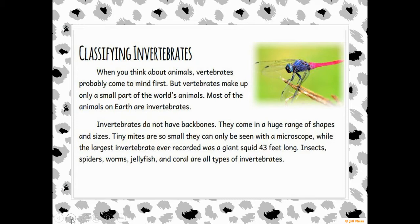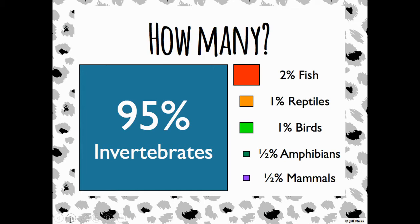Remember that the prefix 'in-' means 'not,' so invertebrate means no backbone. Invertebrates make up 95 percent of all the animals on earth — that's almost 100 percent. We often think of fish, reptiles, birds, and amphibians because they're larger animals, but think about how many tiny ants are in an ant pile compared to humans and other animals.